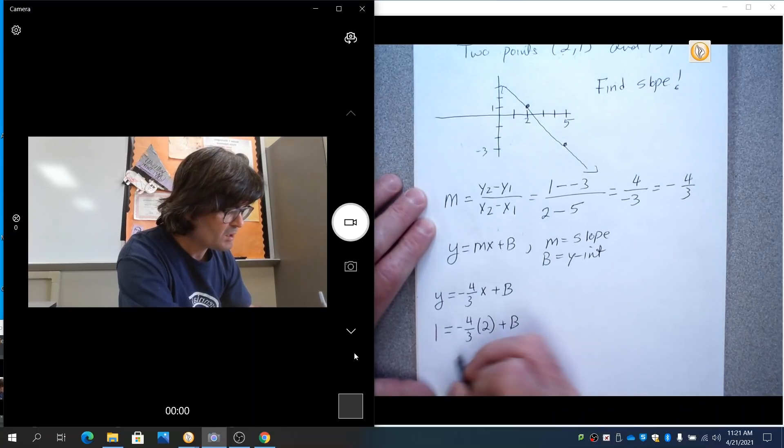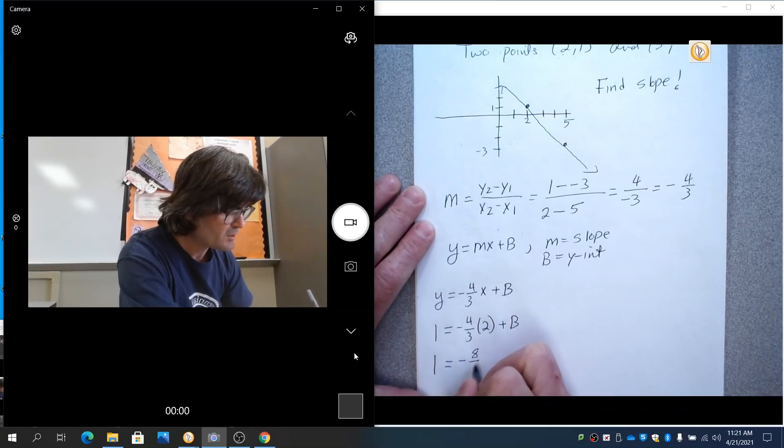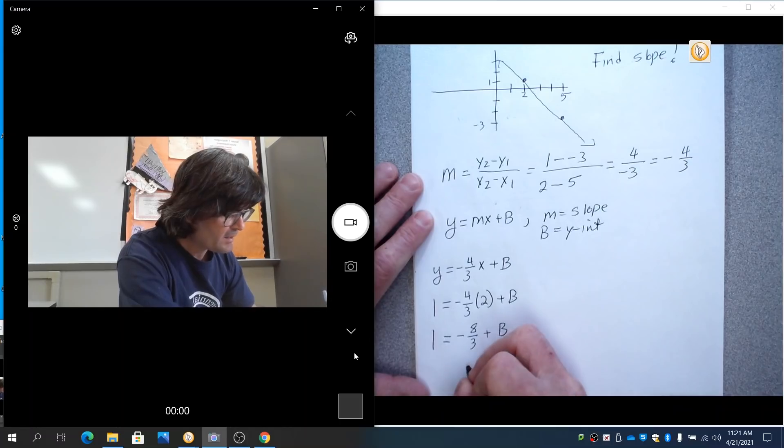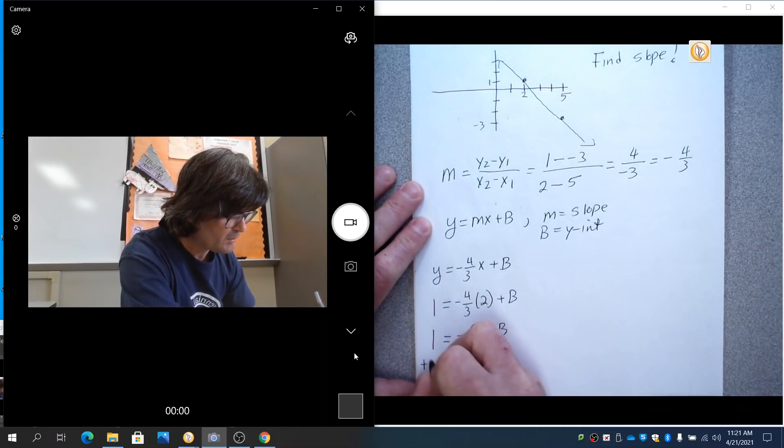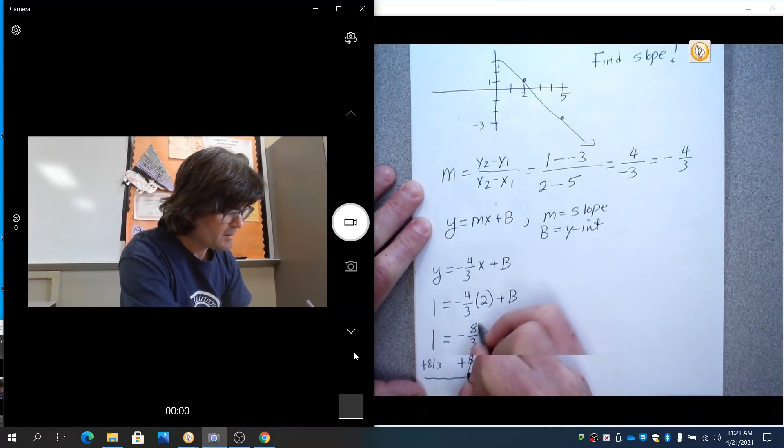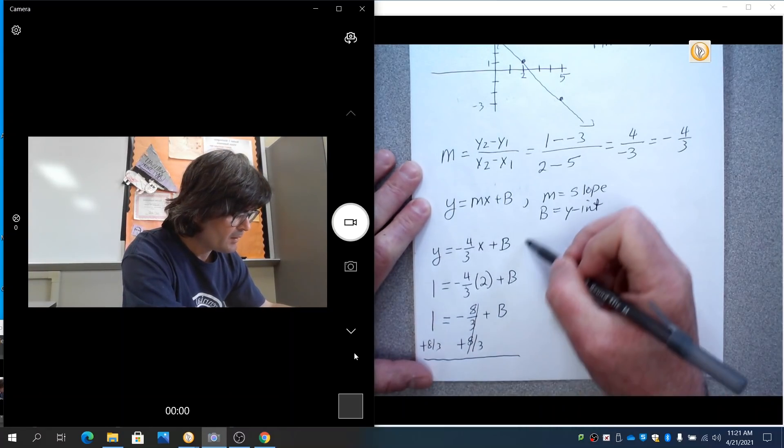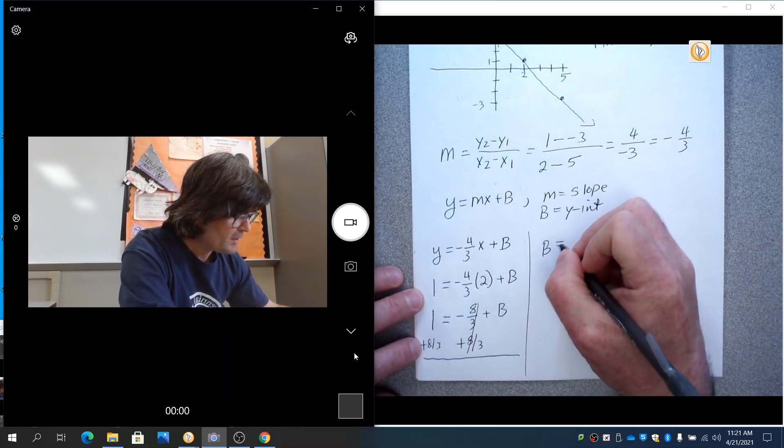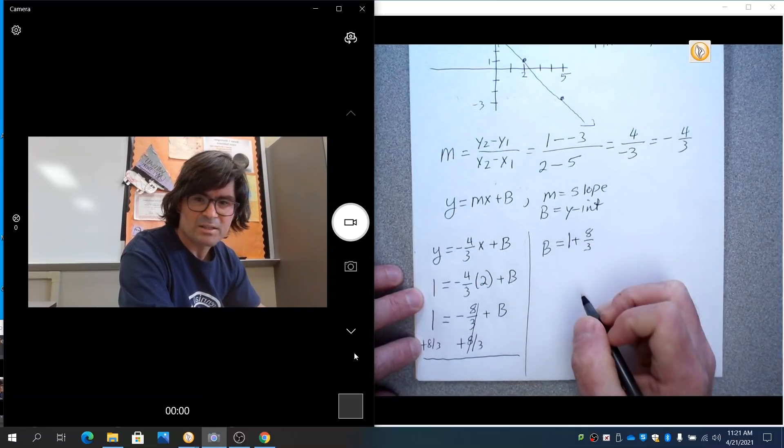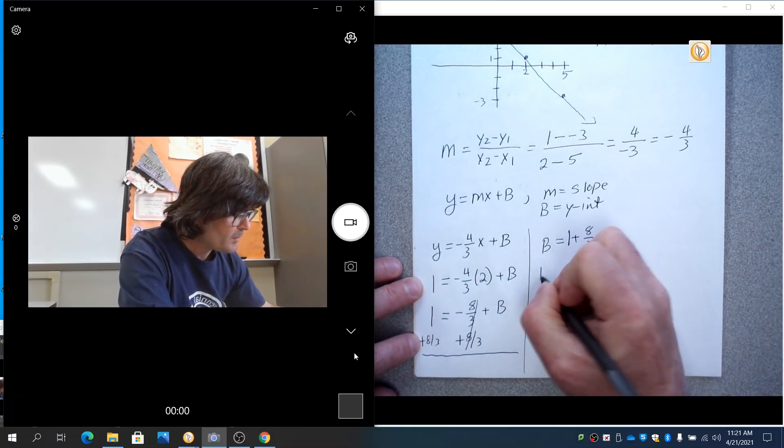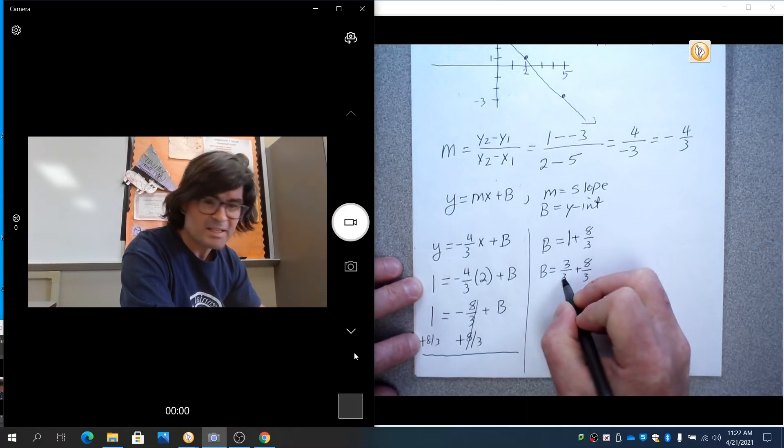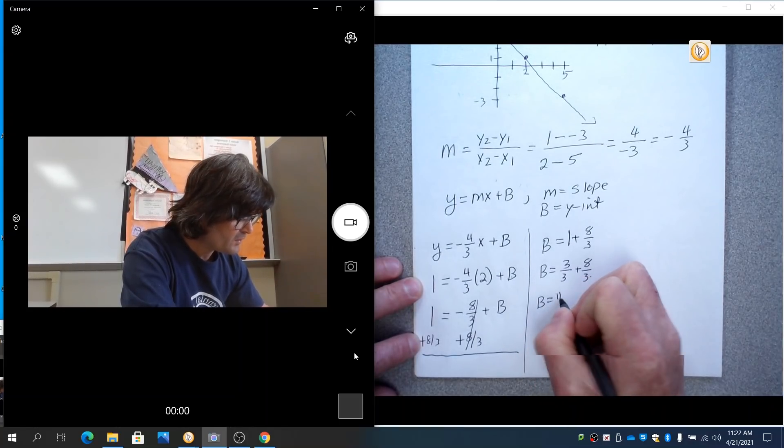We're going to do some algebra and solve for B. This is 2 times minus 4 thirds is minus 8 thirds. And I need to add 8 thirds to both sides here to get rid of the 8 thirds and get B by itself. And B is 1 plus 8 thirds. That doesn't look nice, but you can remember that 1 is the same as 3 thirds. So if you make that as 3 thirds and that's 8 thirds, then B is now 11 thirds.